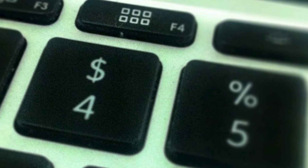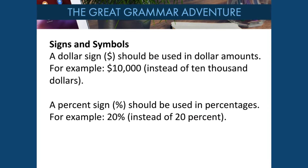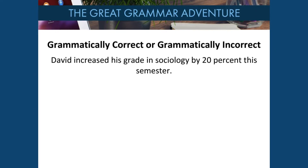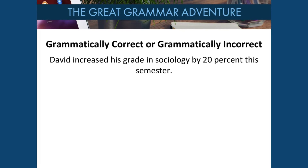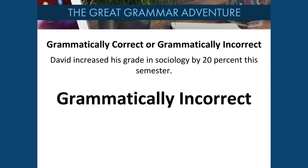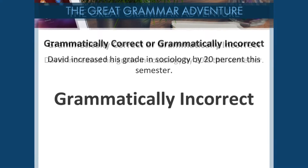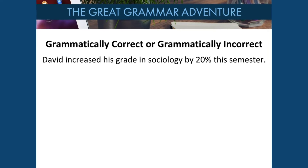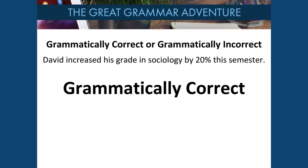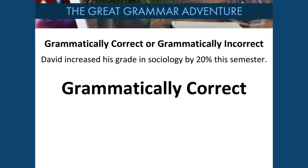Let's talk about signs and symbols. A dollar sign should be used when referencing dollar amounts, and a percentage sign should be used when referencing percentages — you would not spell these words out. Is this grammatically correct or grammatically incorrect? This is grammatically incorrect — you would use the percentage sign, not spell out the word percent. Is this grammatically correct or grammatically incorrect? This is grammatically correct because a percentage sign is used. Remember, we do not spell out the word percent in academic writing.